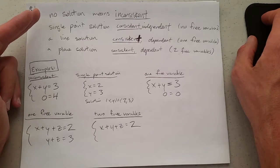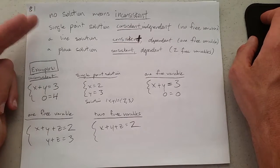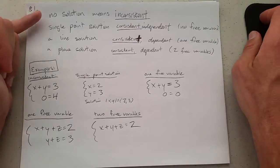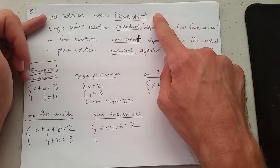Now the solutions, we talked about what the graphs look like and the solutions will be the intersections. If you have no intersection, no solution, we call this inconsistent.